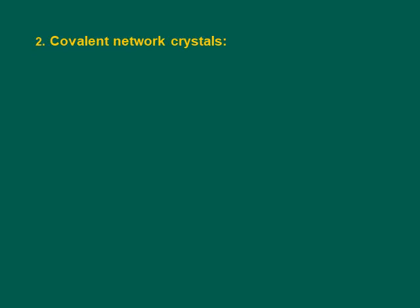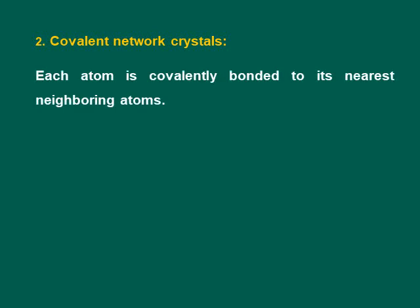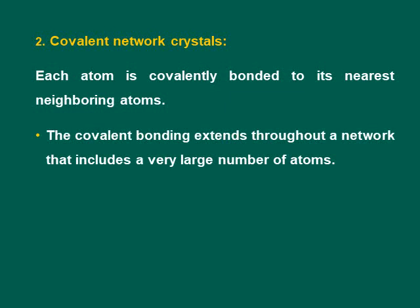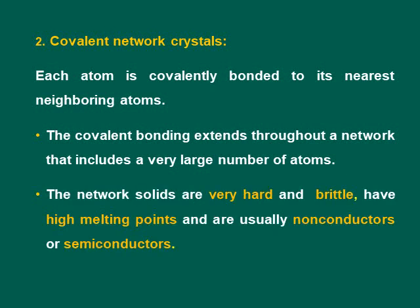In covalent network crystals, the bonds are covalent, but each molecule is linked to the others, forming a network. The molecules are not separated; each atom is covalently bonded to its nearest neighboring atoms, and the covalent bonding extends through a network that includes a very large number of atoms. Network solids are very hard — harder than ionic crystals — brittle, have high melting points, and are usually non-conductors or semiconductors.